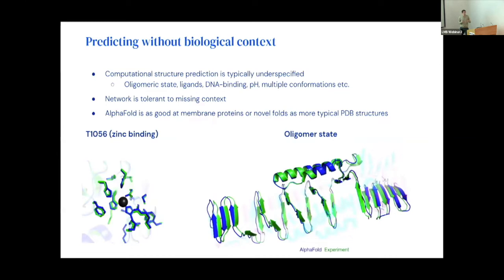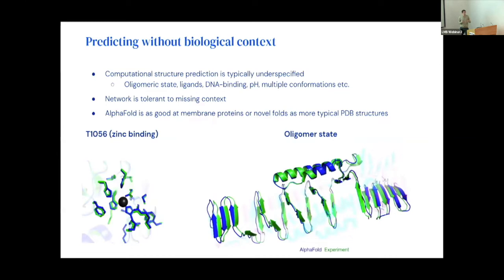Thinking about AlphaFold as a system that works in the Anfinsen paradigm — you put in a sequence and you get out a structure — this is obviously a completely underspecified question: under what oligomeric state, what ligands were bound, what pH, multiple conformations, everything. The answer has to be that the network is somewhat resistant to this being underspecified. For example, it's not that AlphaFold produces APO structures — it produces what it thinks would be the structure deposited in PDB. If it's a heme-binding protein, you would expect it to leave room for the heme and have coordinating histidines, and we do see that.